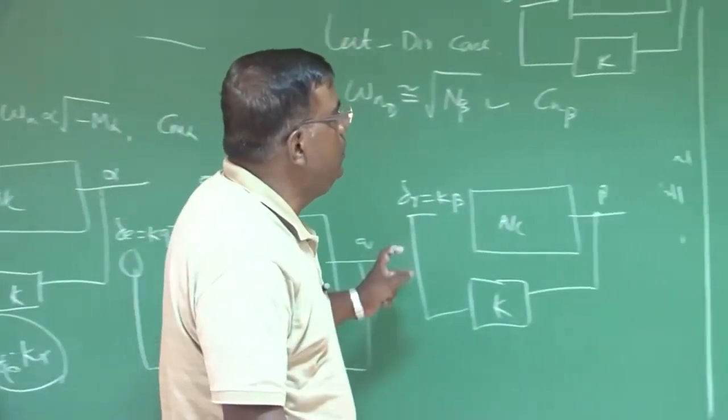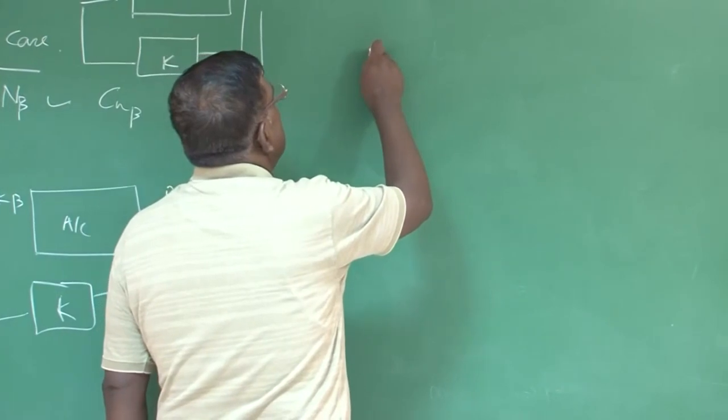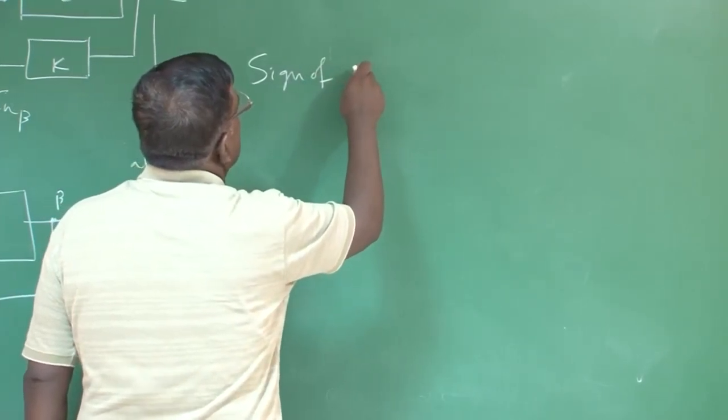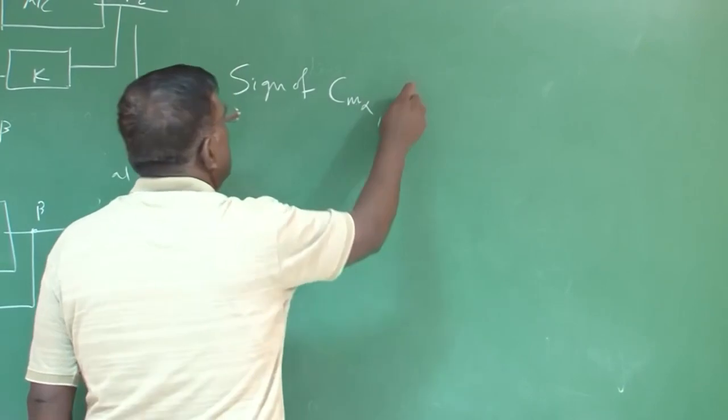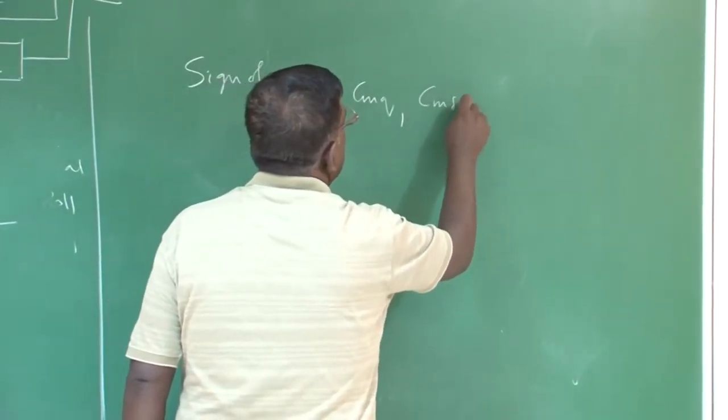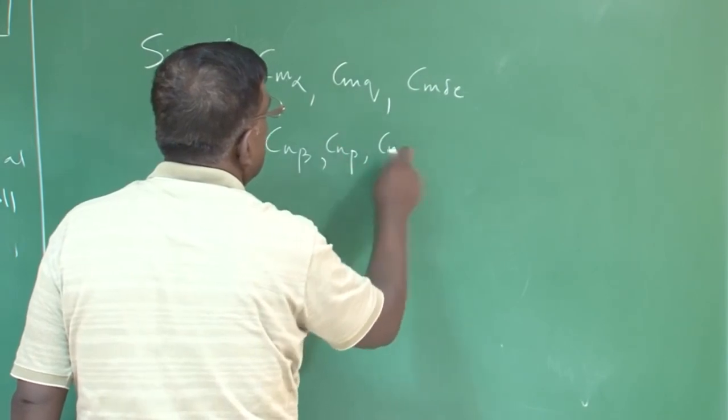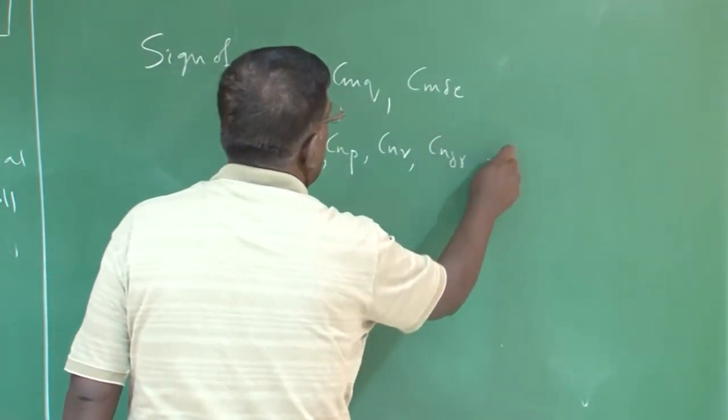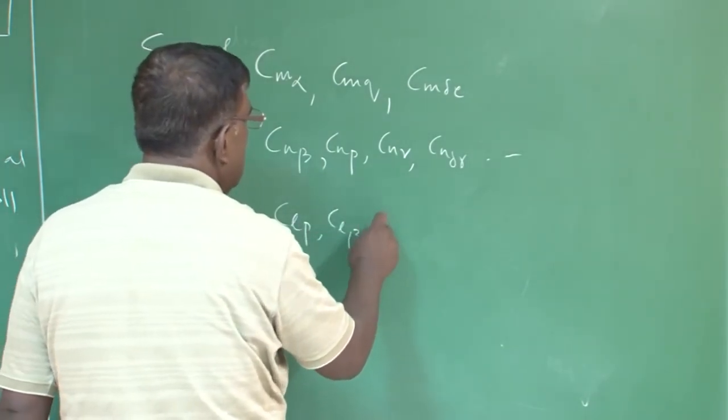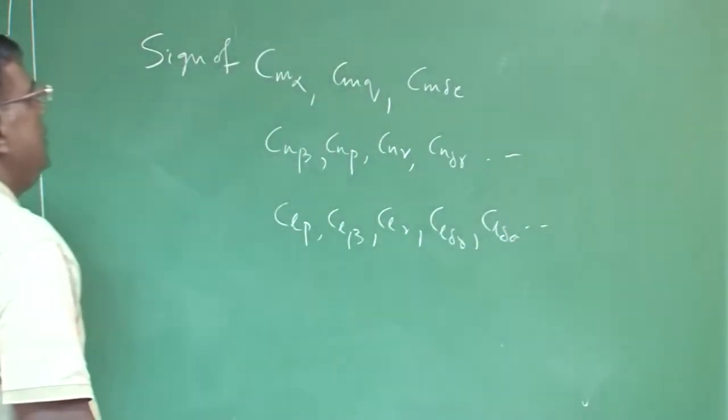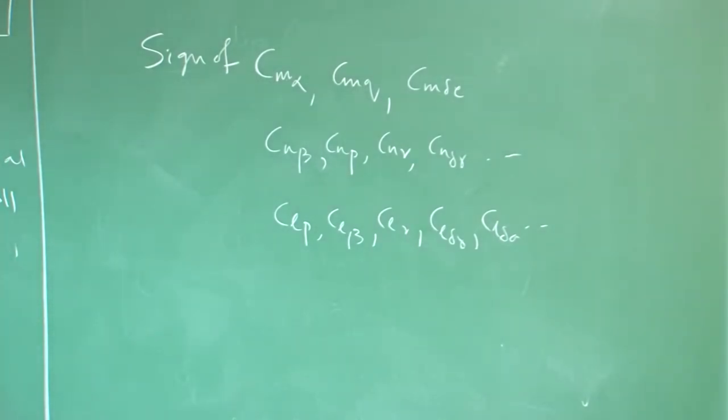Before I conclude this summarization, please understand, you need to give lot of weightage in understanding the sign of these derivatives. Let's say, if I say C_m_alpha, C_m_q, C_m_delta_e, if I say C_n_beta, C_n_p, C_n_r, C_n_delta_r, like that. So it will be C_Lp, C_L_beta, C_L_r, C_L_delta_r or C_L_delta_e. It is extremely important, you should revisit and check whether you clearly understand what are the signs of these derivatives, because these derivatives will have a contribution because of fuselage, because of wing, because of tail, because of engine, because of landing gear, so many, right.